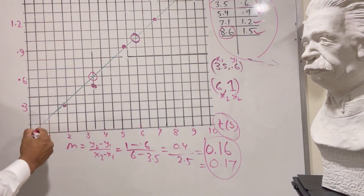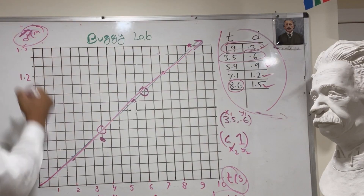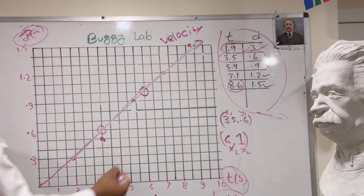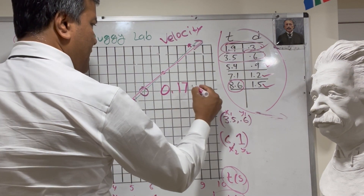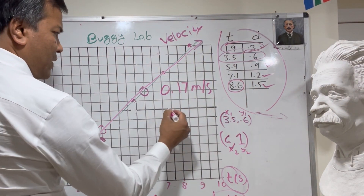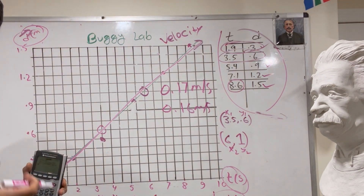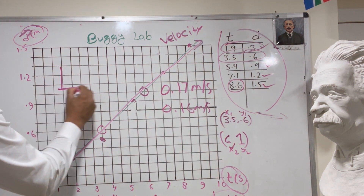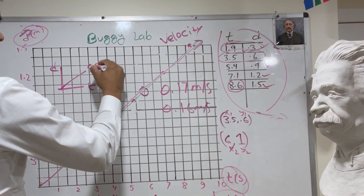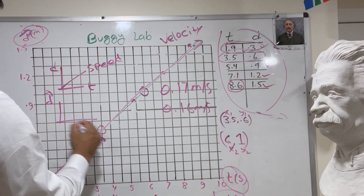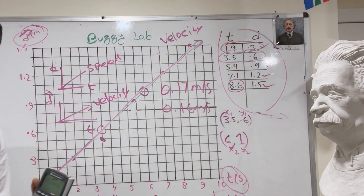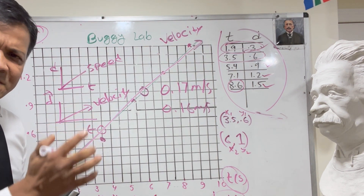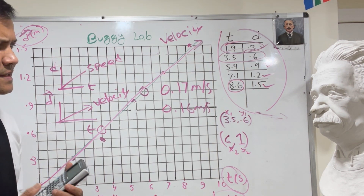On a displacement-time graph, the slope is velocity. The velocity is 0.17 meters per second by regression and 0.16 meters per second by the best-fit line. This shows that the best-fit line is very powerful if you follow the algebraic rules. In this case, displacement and distance are the same because the buggy moved only in the positive direction for 1.5 meters over 8.6 seconds.